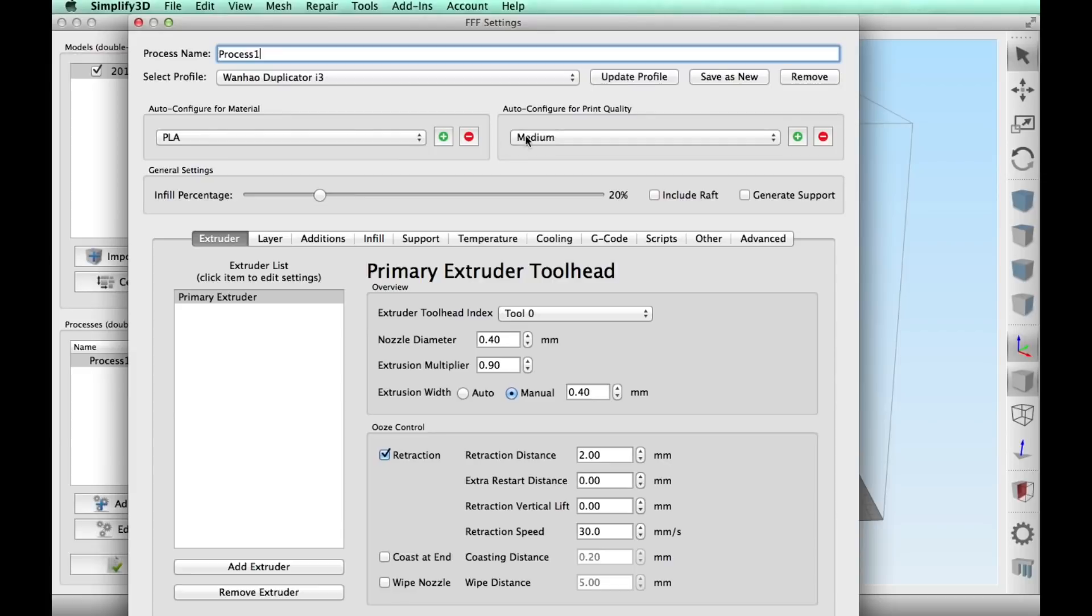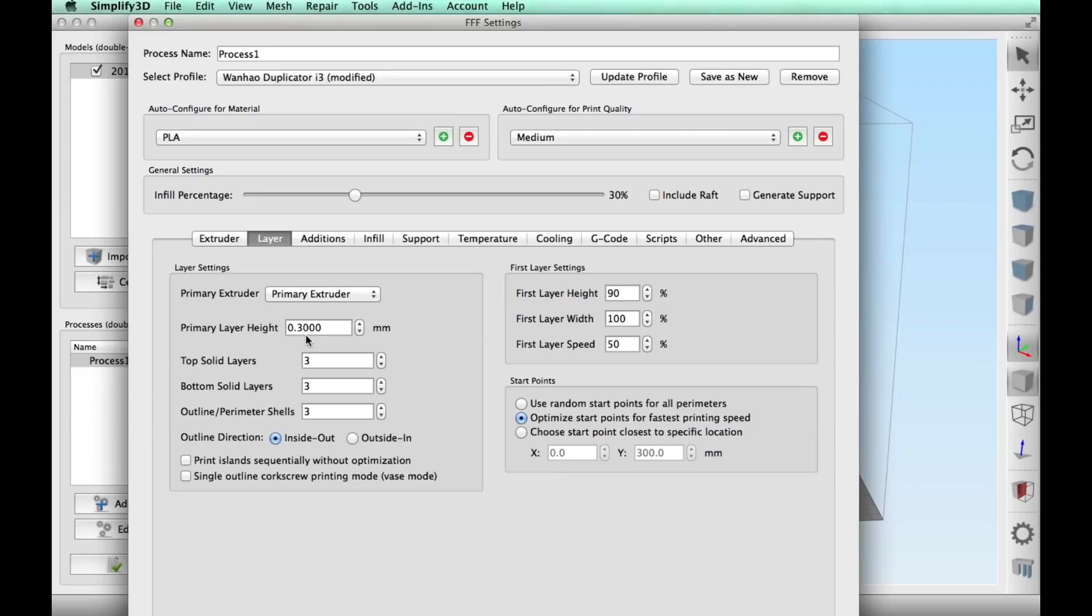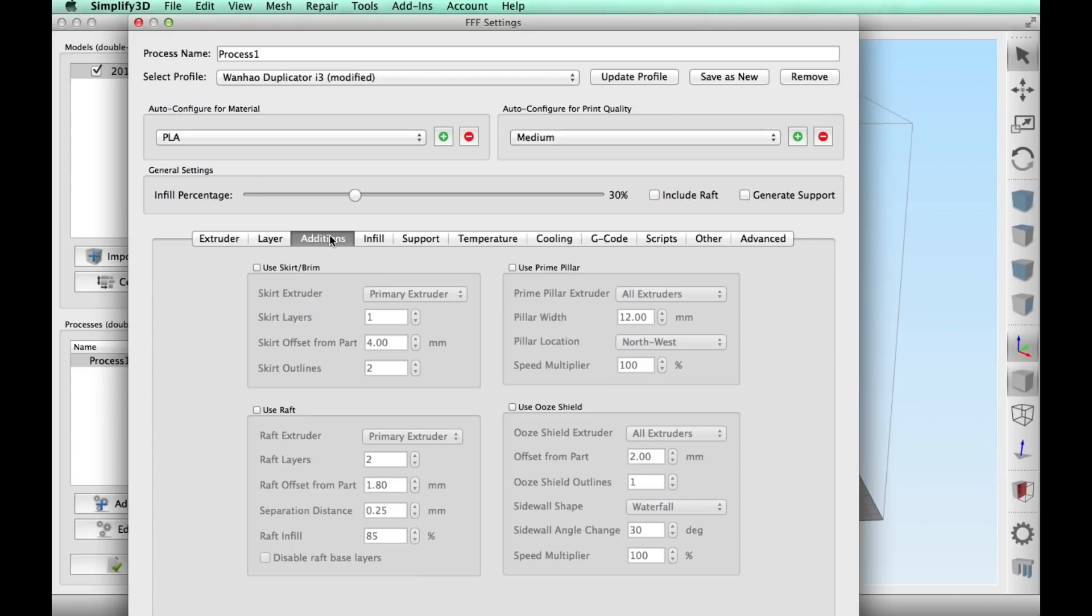I'm going to print it on my Wanhao Duplicator i3 Plus, and I chose 30% fill, layer height of 0.3 with three top and bottom layers and three outer shells.